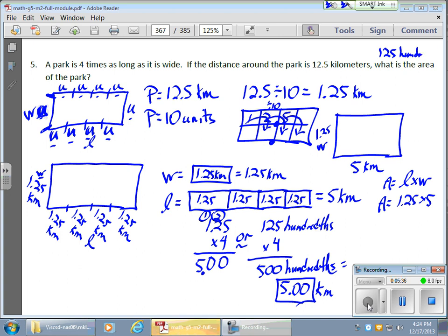So 125 hundredths, I get 125 hundredths. Well, it's 1.25. I want to get rid of that decimal while I multiply. Times 5. There's a 25. That's a 10, 11, 12, and that's a 6. So I have 625 hundredths, which equals in standard form 6.25.